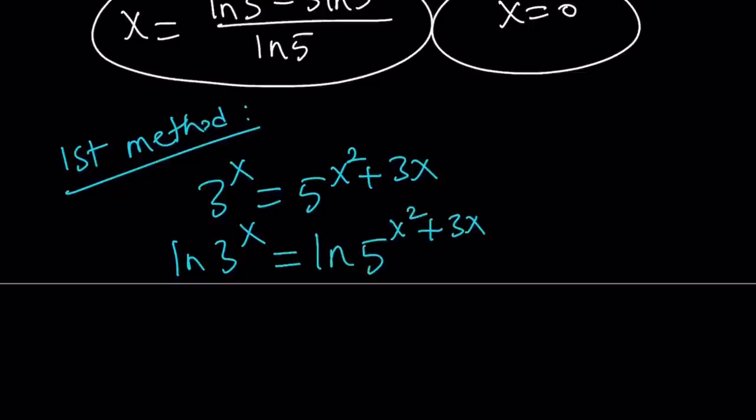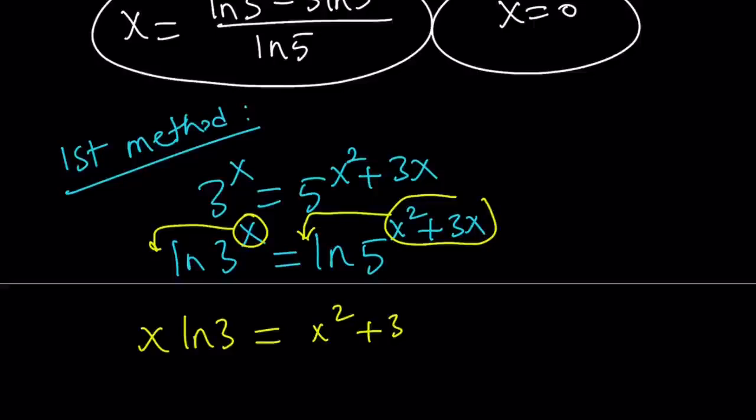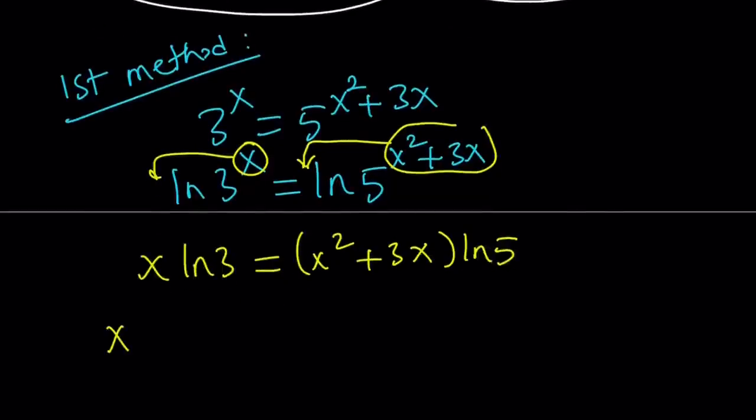And then, let's move the powers. So, we have, this is a power. That's another power. We can go ahead and move these to the front using power properties. This gives us x times ln 3 equals x squared plus 3x times ln 5. Awesome. What am I going to do with this? Well, here's the thing. We're going to go ahead and distribute this and put it together in some form so we can factor it. So, here's what we're going to do. We're going to write x ln 3 equals x squared ln 5 plus 3x ln 5.